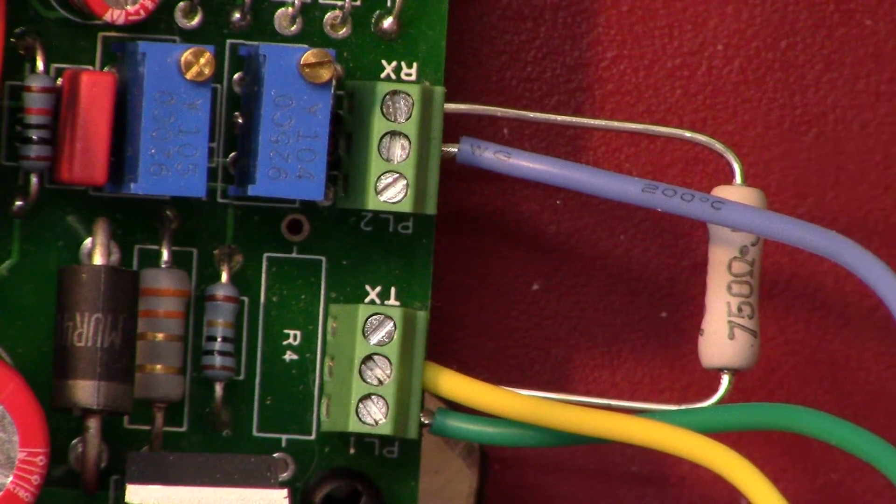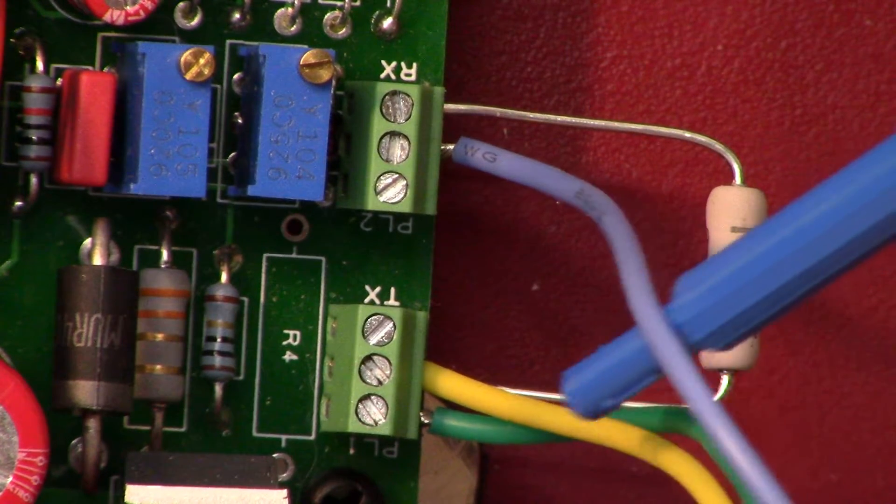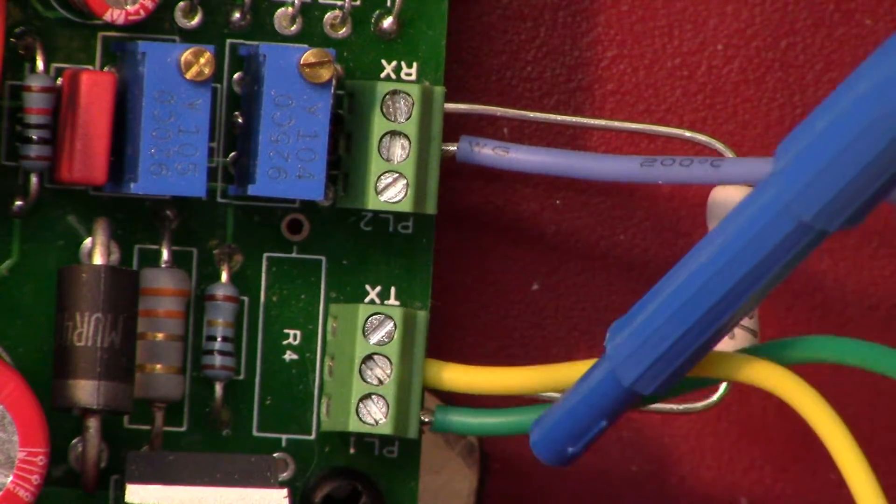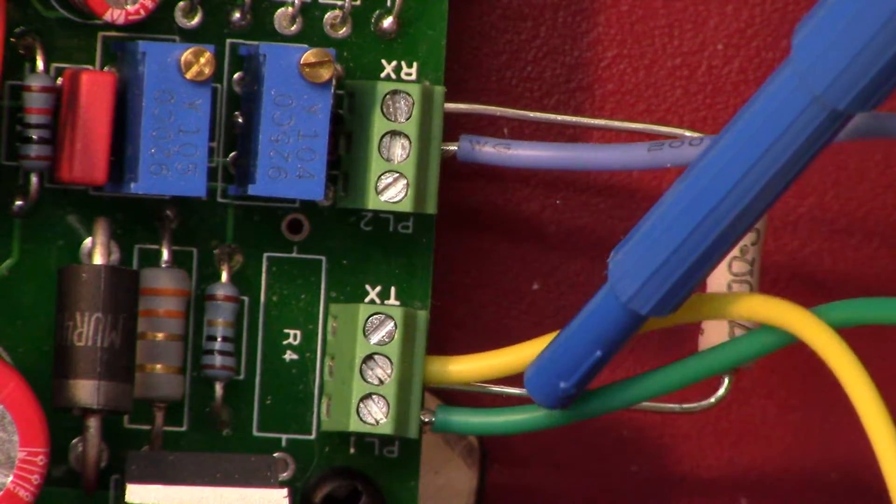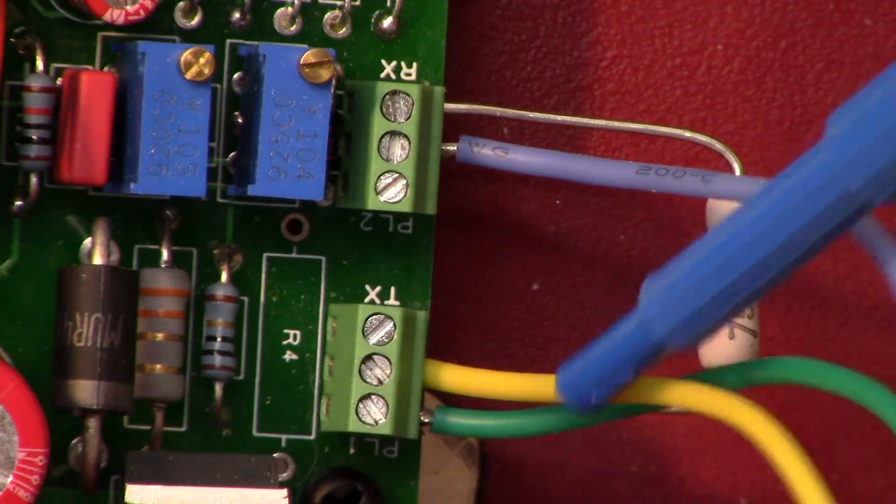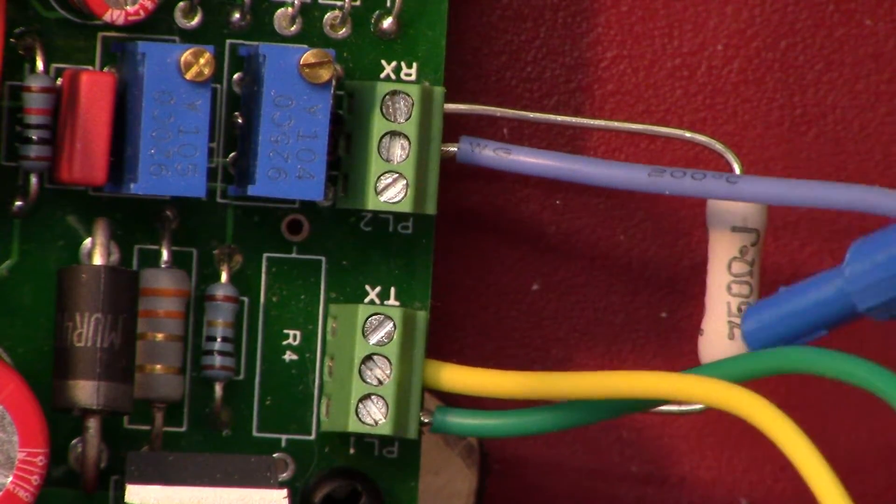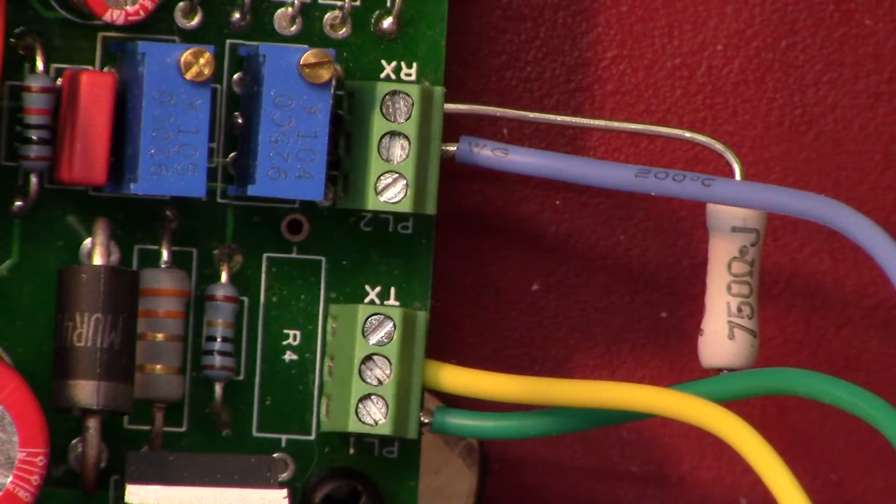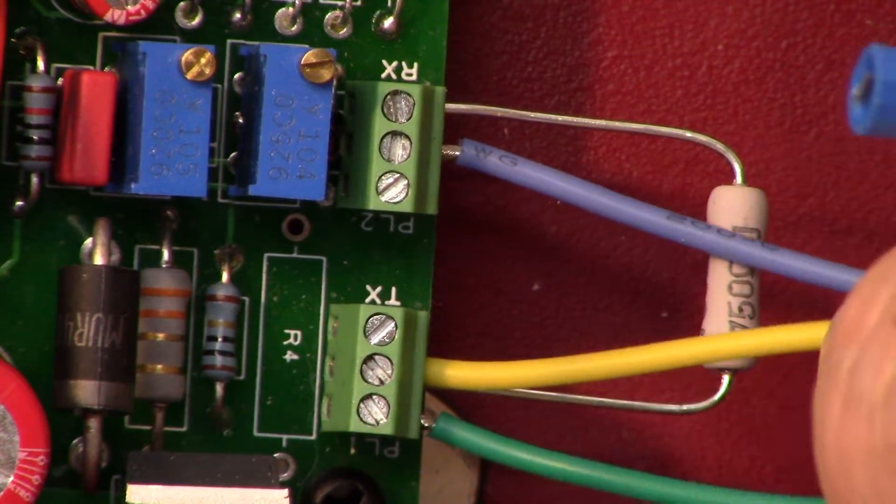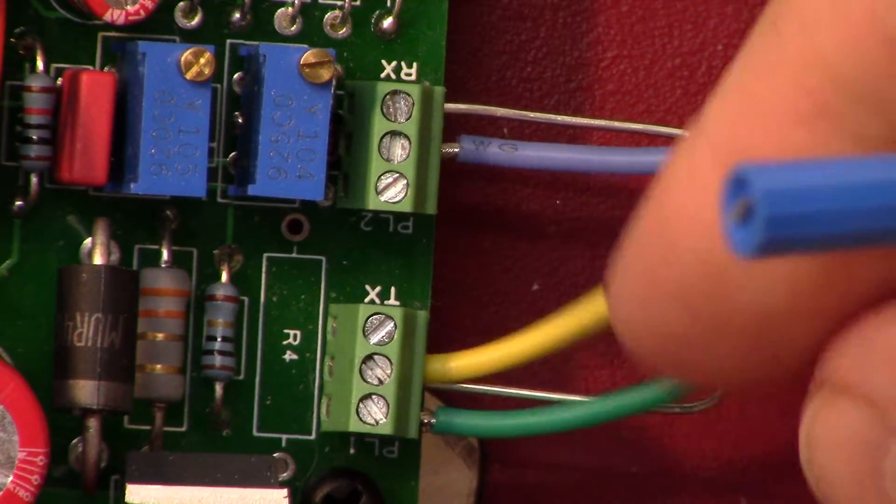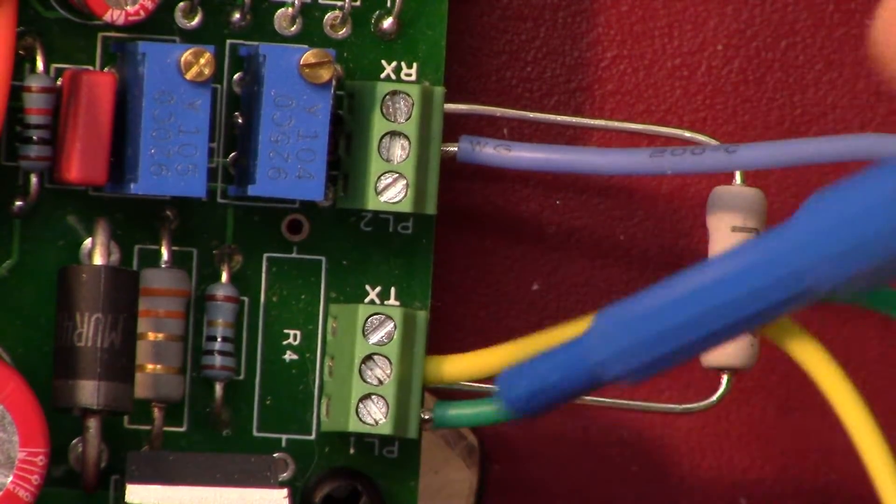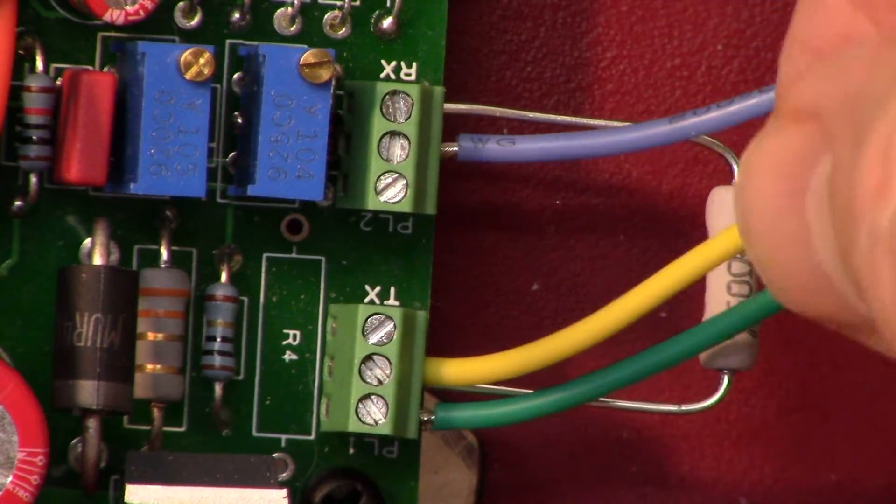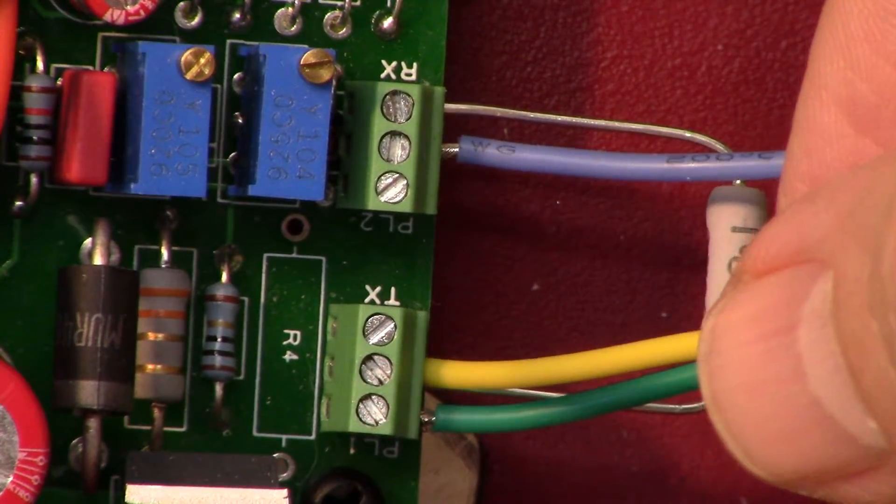We've got the three conductors here. The green one is the trace of my cable. I have that going to zero volts earth, so that's what this is. Yellow I'm using for transmit, blue for receive.